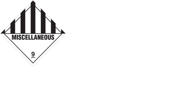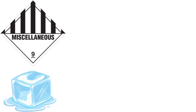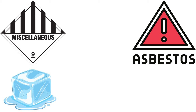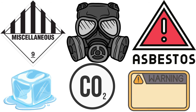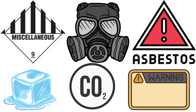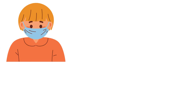Finally, Class 9: Miscellaneous Dangerous Goods. This class covers materials that don't fit into the other eight classes but still pose risks. Examples include dry ice and asbestos. Dry ice, while not explosive or corrosive, can release dangerous carbon dioxide gas if mishandled in a closed container. Class 9 materials encompass a wide range of substances with various hazards, requiring specific precautions and labeling to ensure safe handling and transportation.